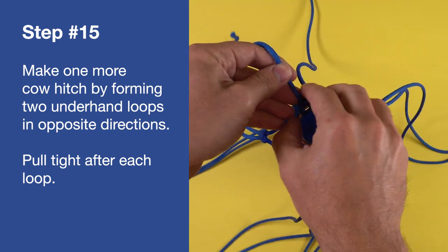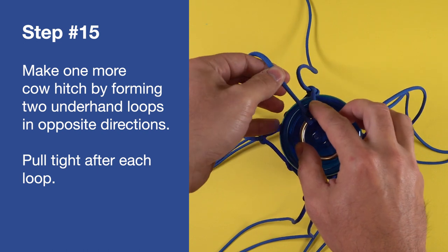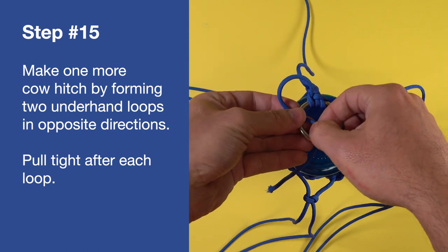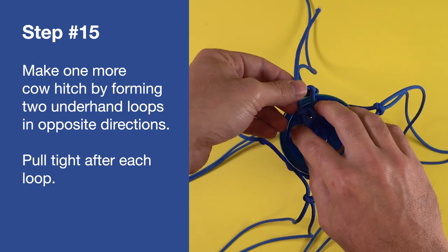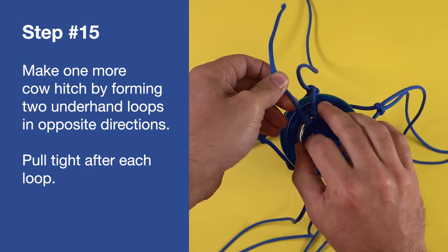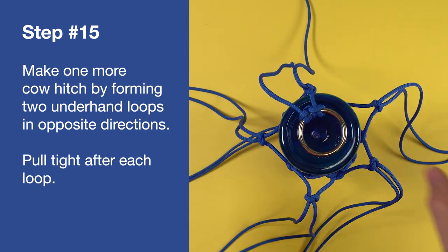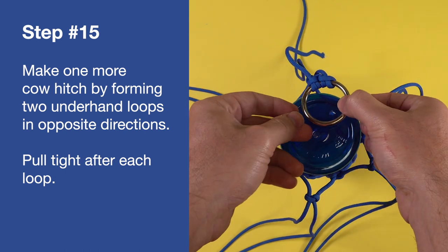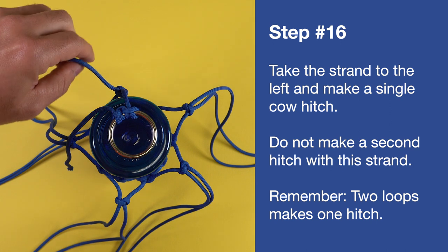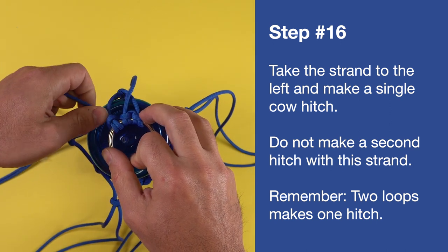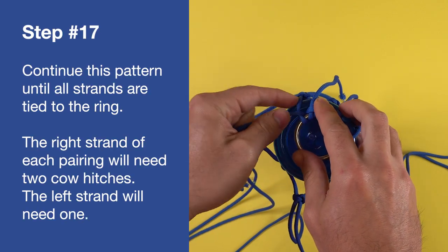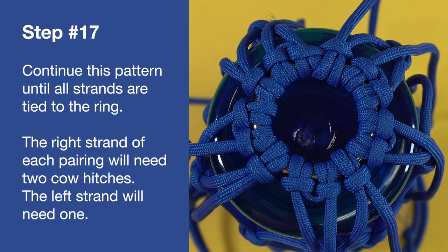Make one more cow hitch by forming two underhand loops in opposite directions. Pull tight after each loop. Take the strand to the left and make a single cow hitch. Do not make a second hitch with this strand. Continue this pattern until all strands are tied to the ring.